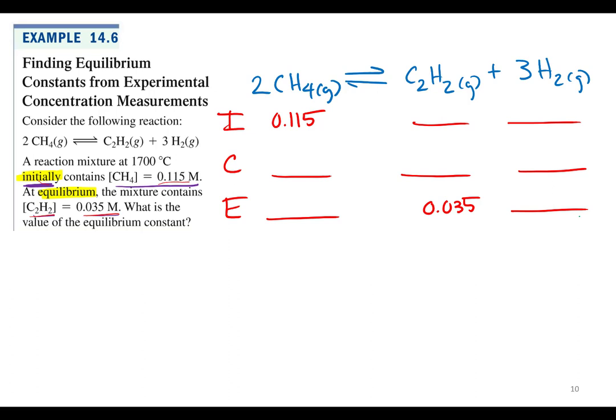First things first, initial T equals zero, nothing's happened yet. All I did was put two moles of CH4 in a flask. So what is my initial concentration of C2H2 and hydrogen? Zero, zero. We haven't made any products yet. Initial means nothing's happened yet so if you're only starting with CH4 that means you've got zero C2H2 and zero hydrogen.